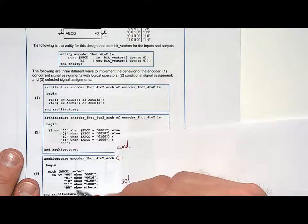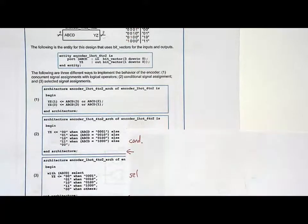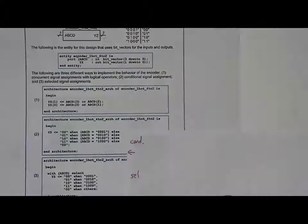You do it down here in the selected signal assignment by doing zero zero when others. So those are kind of the catch-all clauses for the other two modeling behaviors. But again, you can see how VHDL becomes very powerful when you go to model these MSI logic circuits.